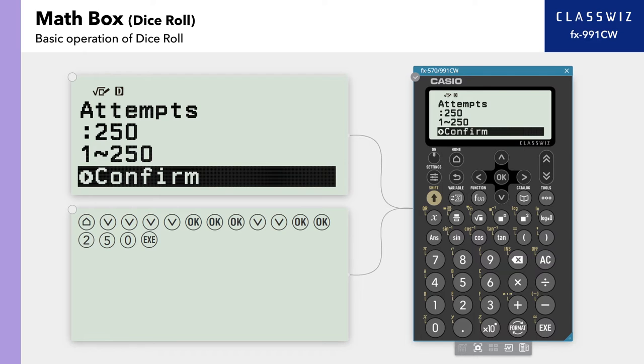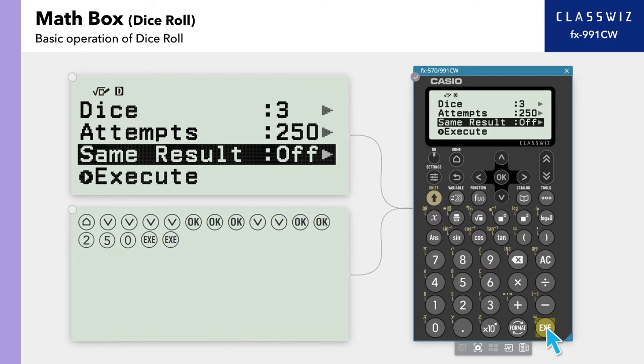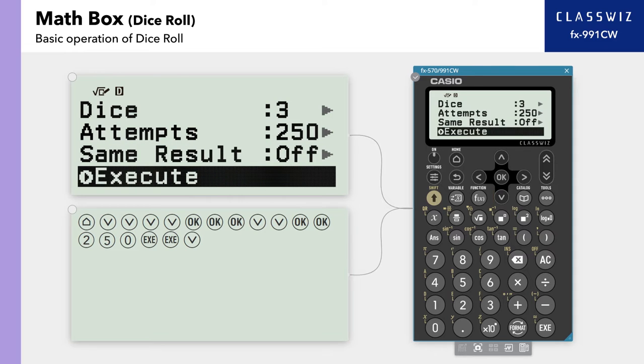On Confirm, press Execute. Leave same result in the off position. Move to Execute, then press Execute.